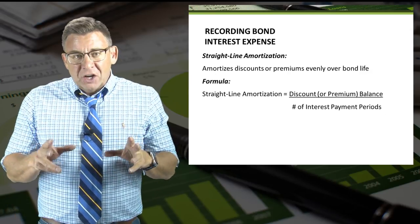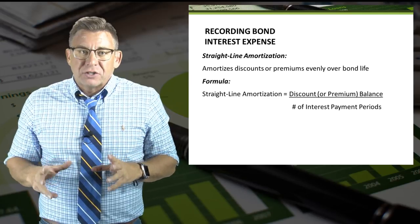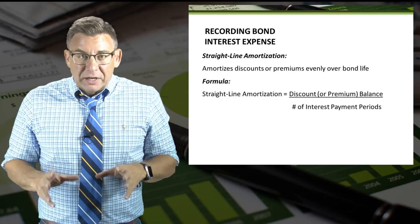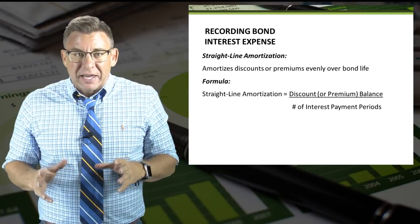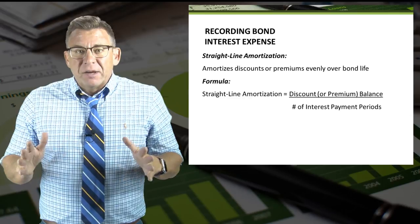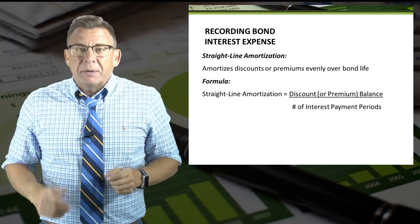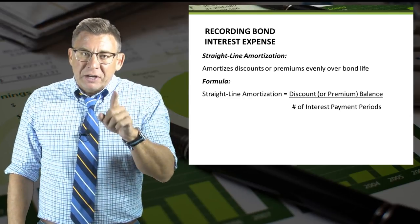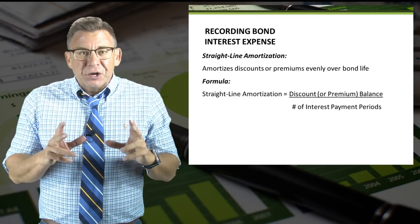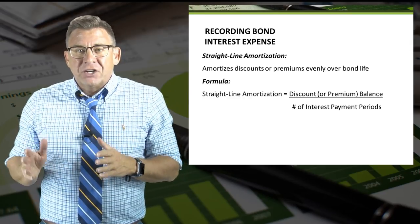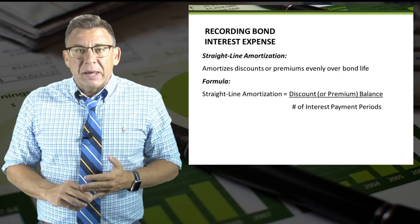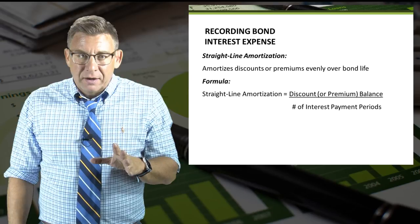This video will focus on recording interest using the straight-line method. The formula to amortize a premium or discount is the balance divided by the number of interest payment periods. Make sure you don't confuse that with years — if it's a five-year bond but it pays interest semi-annually, then the number of interest payment periods is ten, not five.